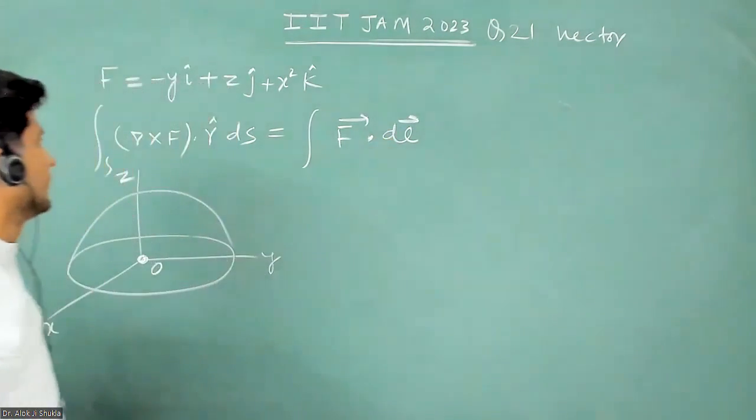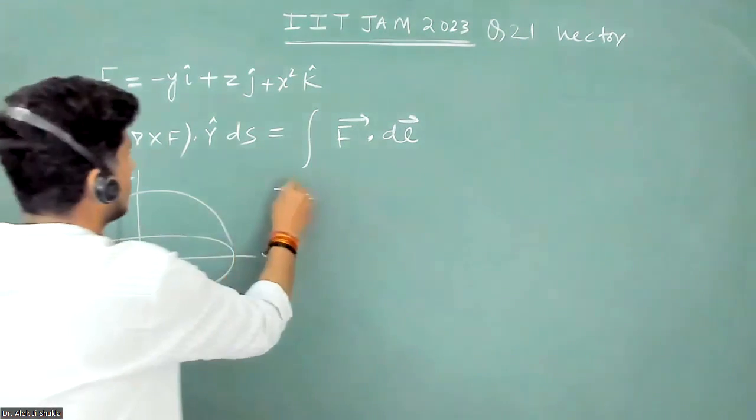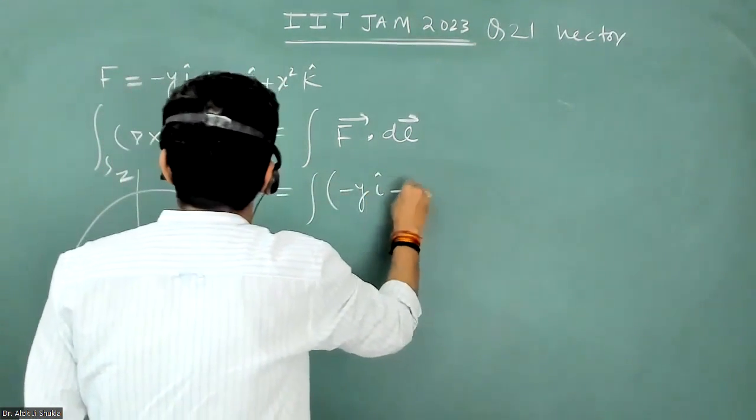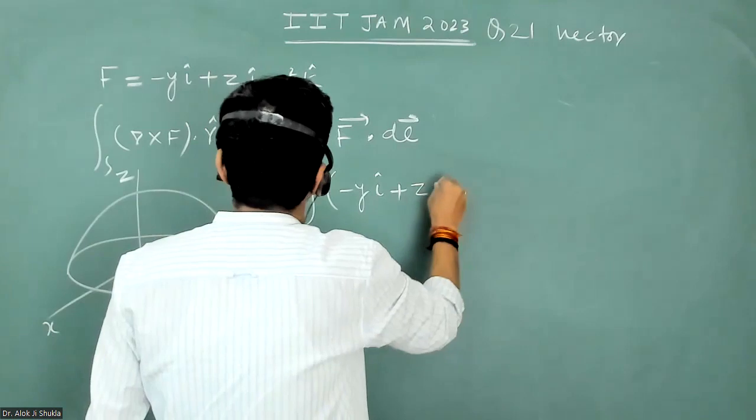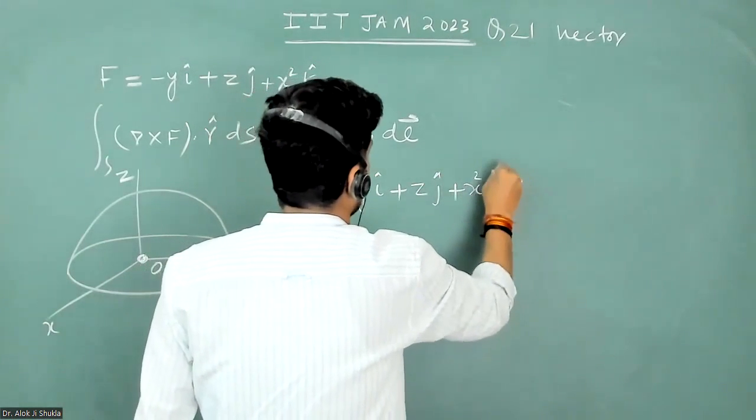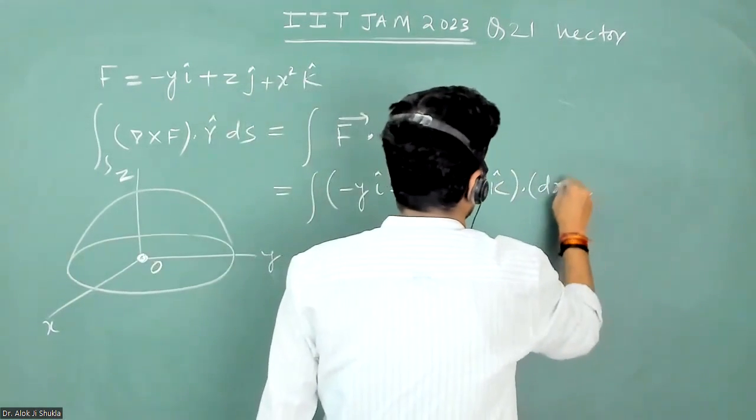dℓ. Del cross F dot ds equals F dot dℓ, so by this we can write the integral: minus y i cap plus z j cap plus x square k cap dot dℓ will be dx i